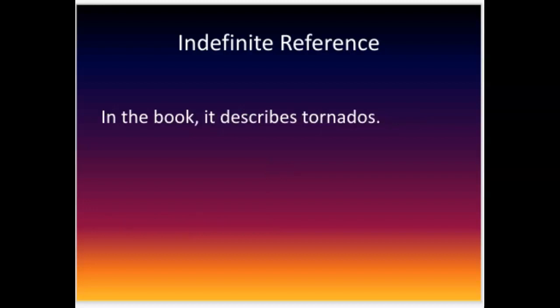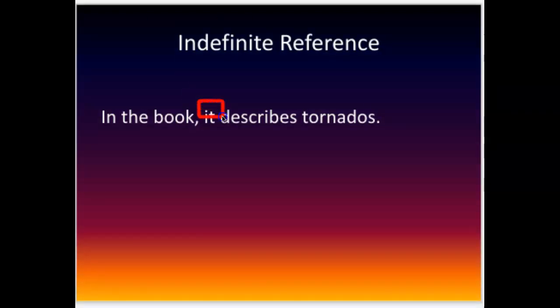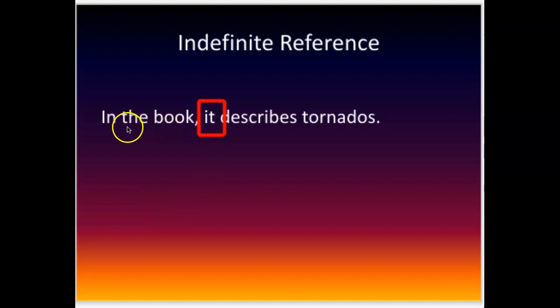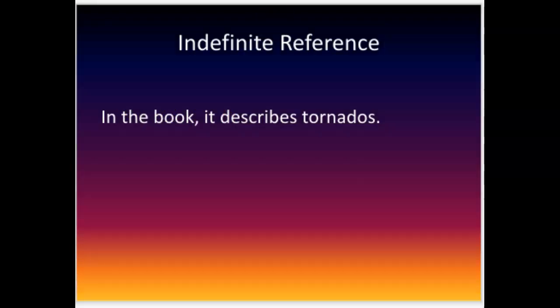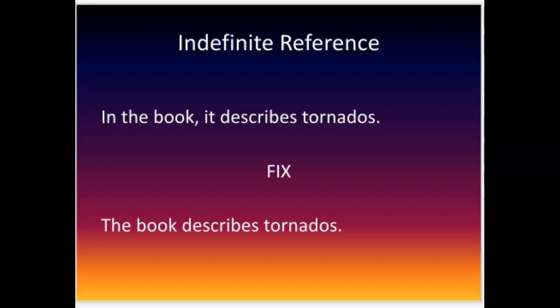Another example: 'In the book, it describes tornadoes.' I see this pronoun 'it,' and I look to see what it's talking about. Well, it's talking about the book, but I've just said what the book is, so I don't need to re-examine the same word from the pronoun right after it. To fix that, I rewrite the sentence: 'The book describes tornadoes.' It eliminates the redundancy and the wordiness.